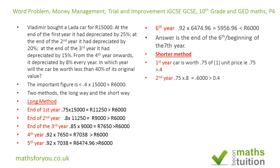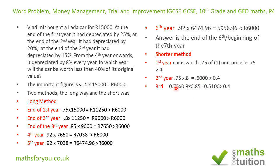For the second year, it's depreciated by 20%, so it's now 0.8 of what it was worth at the end of year one: 0.8 times 0.75 gives 0.6 — greater than 0.4. At the end of the third year it's worth 0.85 of year two's value: 0.85 times 0.6 gives 0.51 — still greater than 0.4.